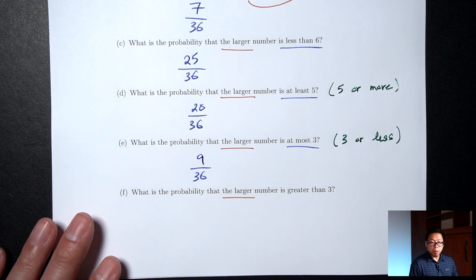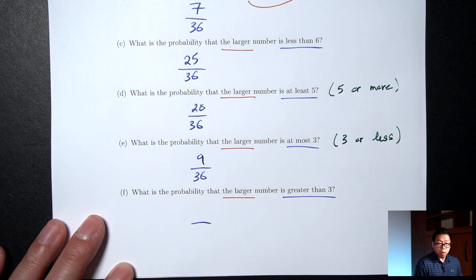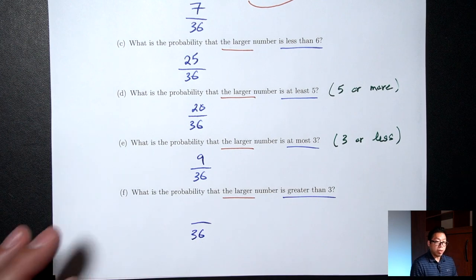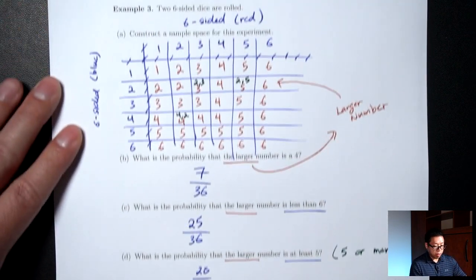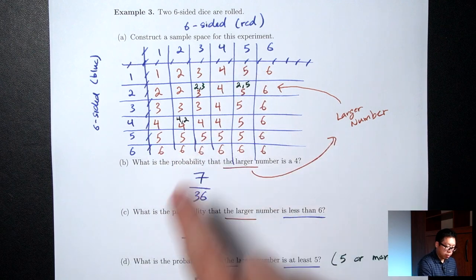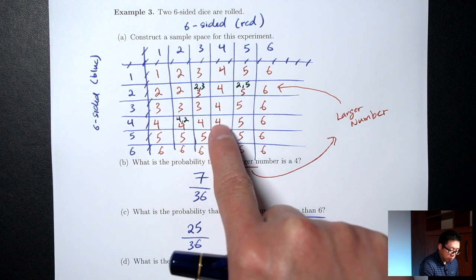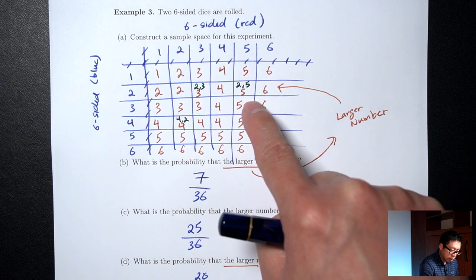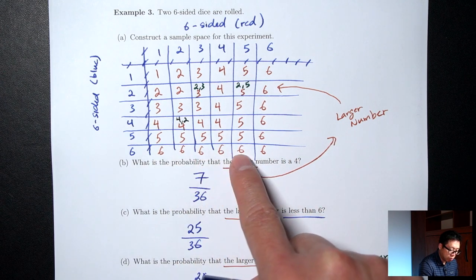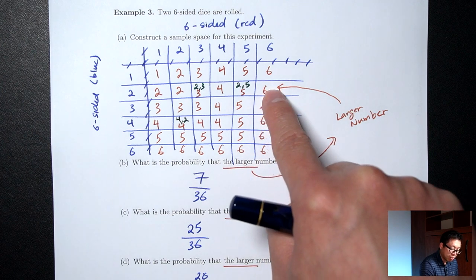Part F: what's the probability that the larger number is greater than 3? Bottom is 36. Greater than 3 would be all the 4s, 5s, and 6s: counting gives 27 outcomes. Probability is 27/36.